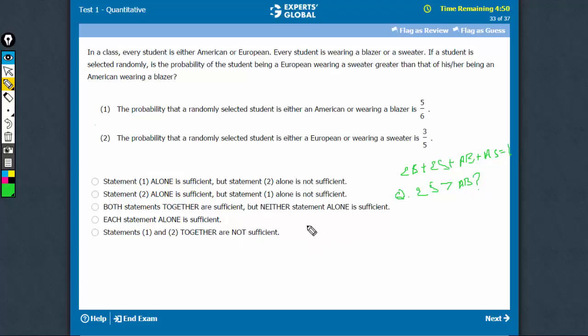Statement 1 says that American wearing a blazer plus American wearing a sweater (all Americans) plus European wearing a blazer has probability 5 by 6. Therefore, European wearing a sweater has probability 1 by 6. This talks about only ES. It doesn't talk about AB. Therefore, statement 1 is not sufficient.